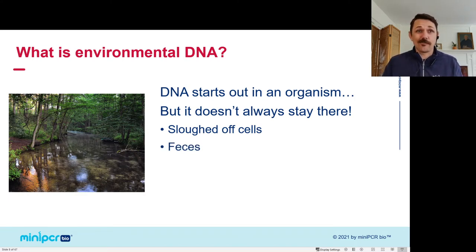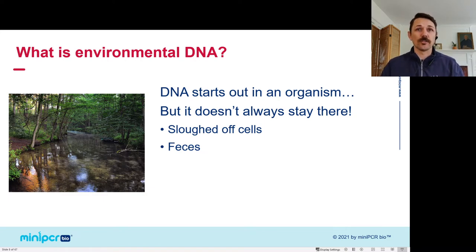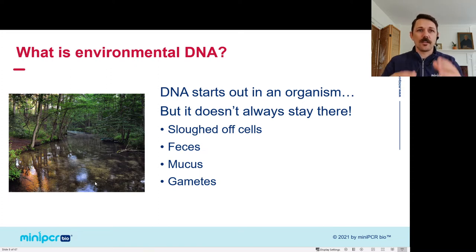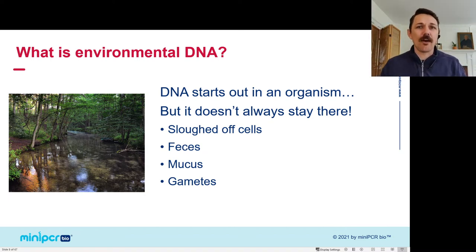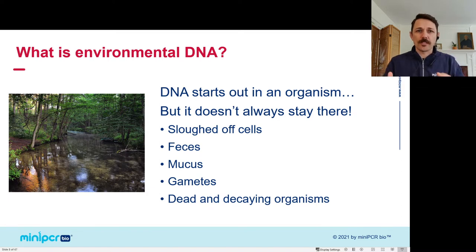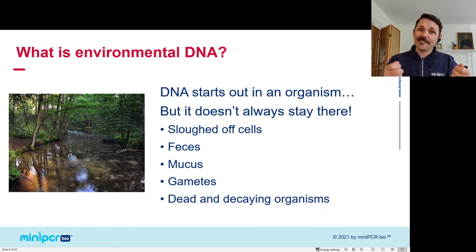A major source is feces — lots of organisms poop in the environment, and that feces is filled with their DNA and the DNA of everything they ate, which enters soils and waters. There's also mucus: a fish swimming through water secretes mucus that washes off carrying DNA. Gametes are another source — tons of organisms have external fertilization, and pollen releases DNA into the environment with every grain. Finally, there are dead and decaying organisms; every leaf that falls into a stream releases DNA as it decays. That DNA degrades over time, but if you're there while it's still around, you can find it.